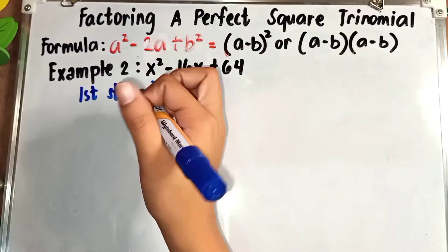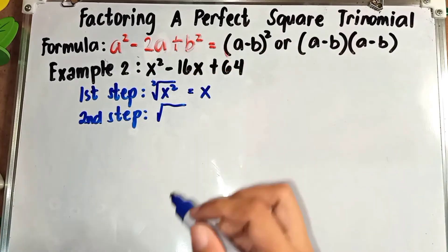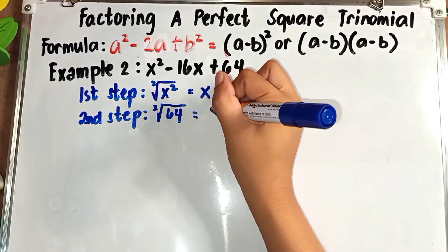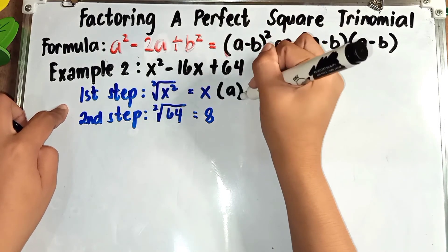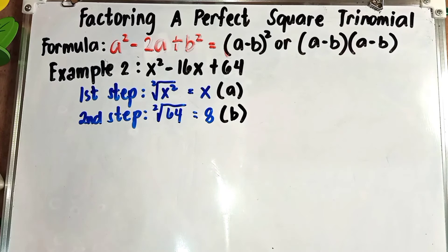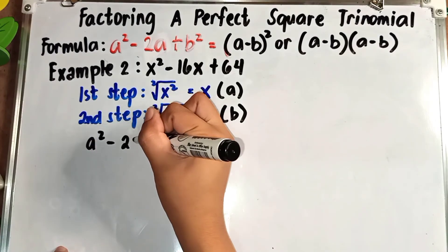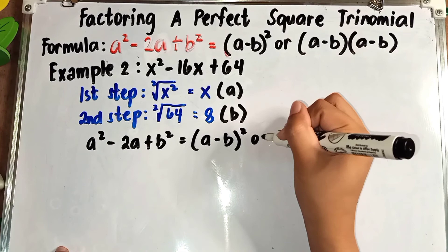Step 2: Find the square root of the third term. The third term is 64, and the square root of 64 is 8, because 8 × 8 = 64. So the value of a is x and the value of b is 8. Now we follow the formula: a² - 2ab + b² = (a - b)² or (a - b)(a - b).